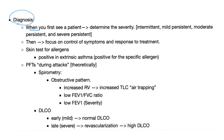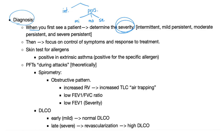When you first see a patient, ask yourself: what is the severity? The severity of asthma is divided like this. We have intermittent asthma, which is less severe, and then we have persistent asthma, which is more severe. Persistent has three subtypes: mild, moderate, and severe persistent asthma. So one of those four — intermittent, mild persistent, moderate persistent, or severe persistent.